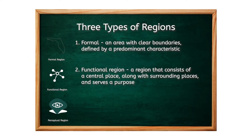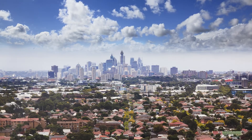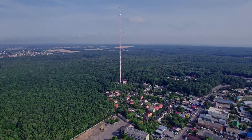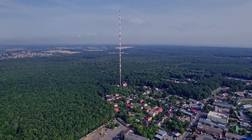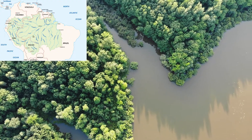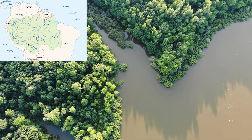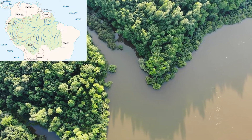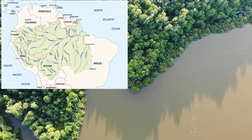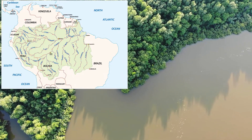A functional region serves a function. It usually consists of a central place and surrounding areas affected by it. A city and its surrounding suburbs could be a functional region, as can an area that receives reception from a local television or radio station. The places that make up functional regions can even be linked by the flow or movement of some entity — the Amazon Drainage Basin in South America is a functional region made up of the Amazon River and its tributaries.